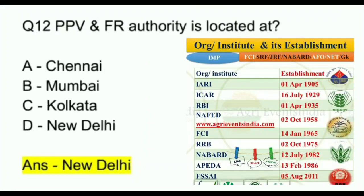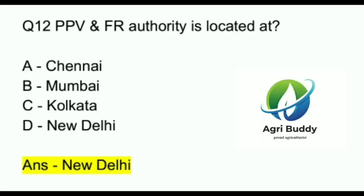Question 12. PPV and FR authority is located at? A. Chennai. B. Mumbai. C. Kolkata. D. New Delhi. And the answer is New Delhi.